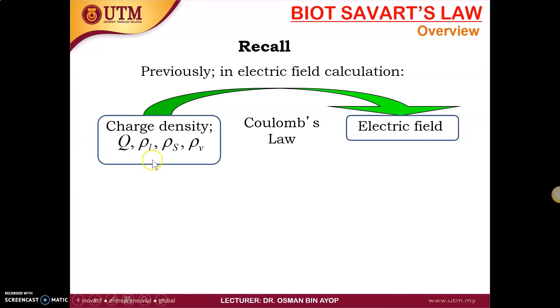We have the rho L, which is the line charge, we have rho S, the surface charge, and also rho V, the volume charge. Q represents the total charge in the system, and Q also can represent as a point charge. By using Coulomb's law, we can find the electric field intensity.